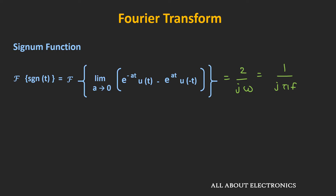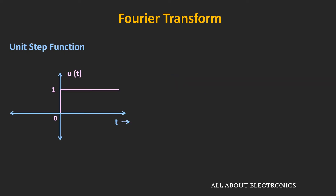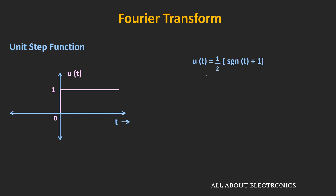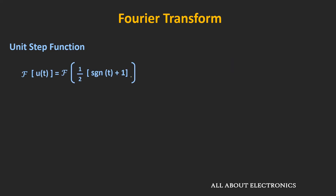And with the help of this signum function, we can find the Fourier transform of the unit step function. The thing is, this unit step function is also not integrable. But using the signum function, we can find the Fourier transform. This unit step function can be expressed as 1/2 times the signum of t plus 1. That means, when we add 1 to the signum function, then the minus 1 value gets cancelled out. And if we take half of the entire term, then we get the unit step function. So now let's find the Fourier transform of this function. From this we can write it as 1/2 times the Fourier transform of the signum function plus the Fourier transform of 1.